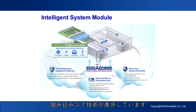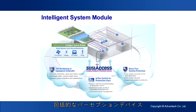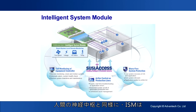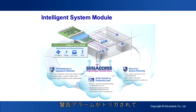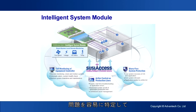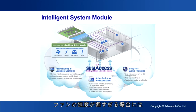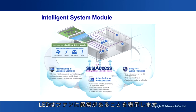By virtue of Advantech's embedded core technology, hardware and software engineers have successfully designed a comprehensive perception device — the Intelligent System Module (ISM) — which, like a human nerve center, is able to detect the status of key components in industrial computers such as system temperature, fan speed, voltage, and hard disk health. If a system suffers any abnormal status, a warning alert is triggered to indicate the problem to system maintainers and supervisors. When fan speed is too low, ISM will automatically sound an alarm and an LED indicates the fan abnormality.